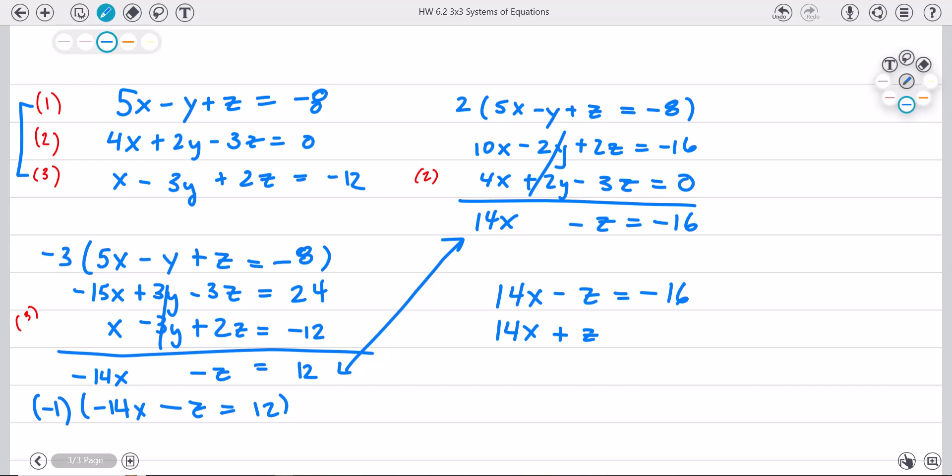A negative times a negative, aha, now you see the z is going to end up canceling. And then a negative times a positive, a negative twelve.